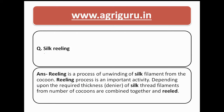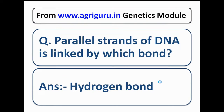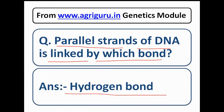Question number 50 is from the topic of silt drilling — we don't have the correct question and options; if you know, comment below. Question number 51: buffalo milk is more white than cow milk because of beta-carotene. We have discussed this topic in the animal husbandry module of agriguru.in. Question number 52: parallel strands of DNA are linked by which bond? The answer is the hydrogen bond.